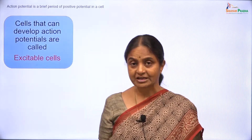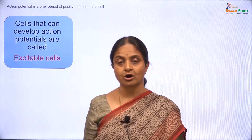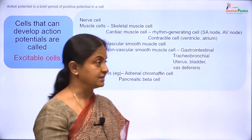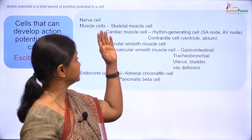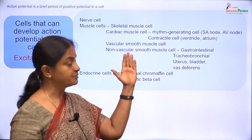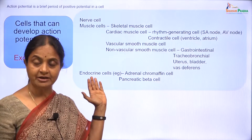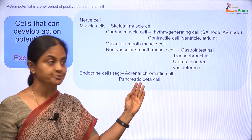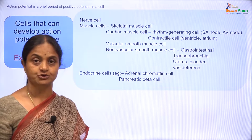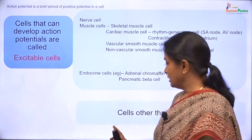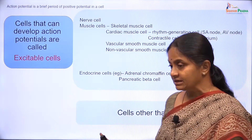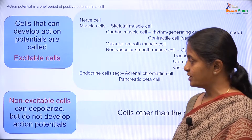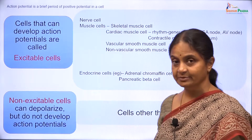Cells that can develop action potentials are called excitable cells. Here is a list of excitable cells: the nerve cell, different types of muscle cells, and even some endocrine cells which develop action potentials prior to exocytosis of the hormone. And cells that do not develop action potentials can be referred to as non-excitable cells.